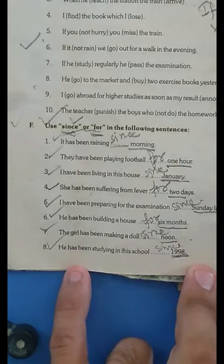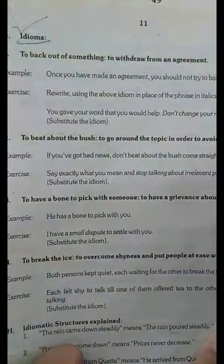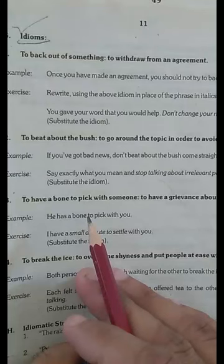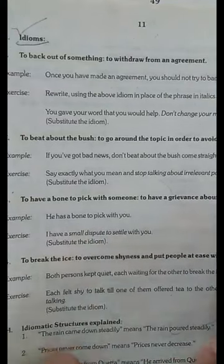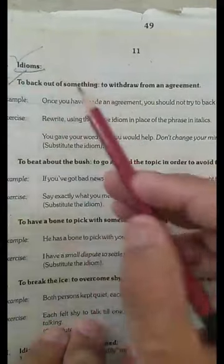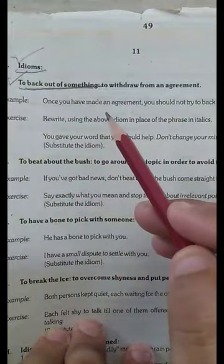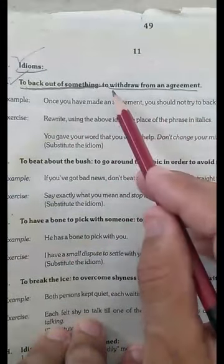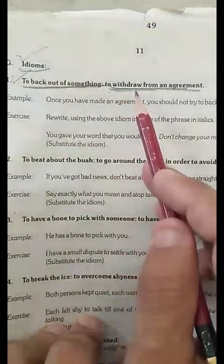Now, second is idioms. What are idioms and why are they used? Idioms are phrases that are used or expressed in a sentence that have another meaning, or they give us another meaning, or they hold their own meaning. Here is the first idiom: 'to back out of something.' This means to withdraw from an agreement.